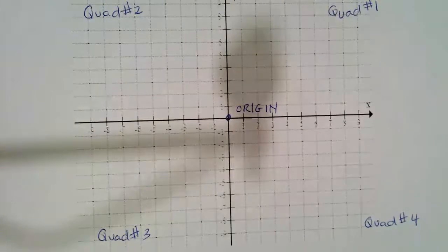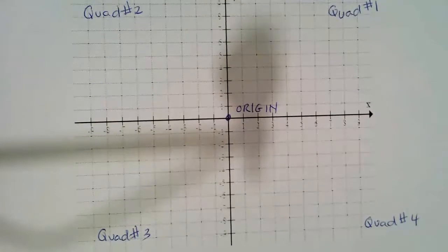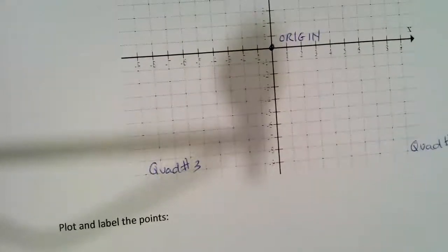Now what we want to do is we want to plot the ordered pairs. And so I've got some examples down below. We've got the points.